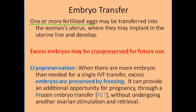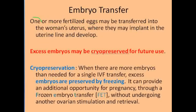One or more fertilized eggs are transferred into the woman's uterus and implanted in the uterine lining to develop. For this IVF purpose, one fertilized egg is implanted in the uterine lining to develop.